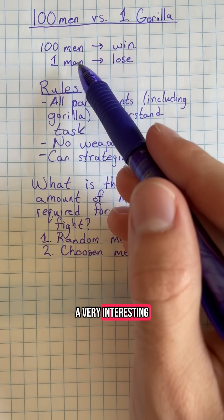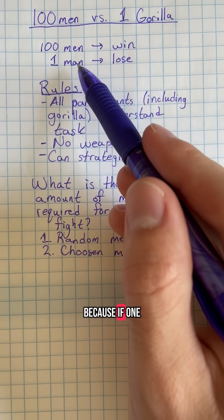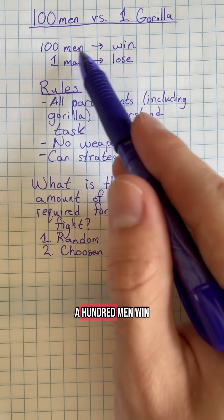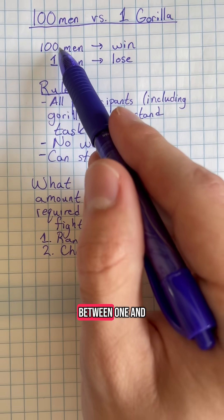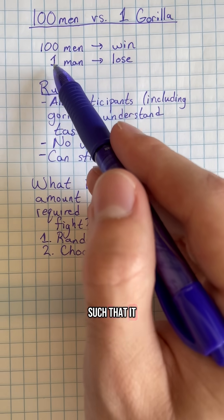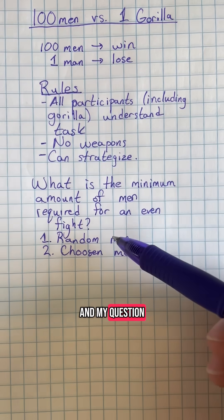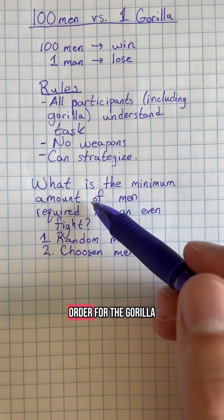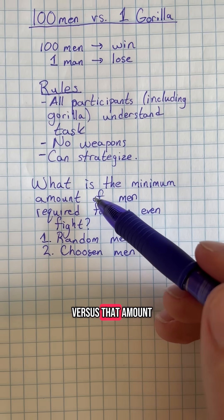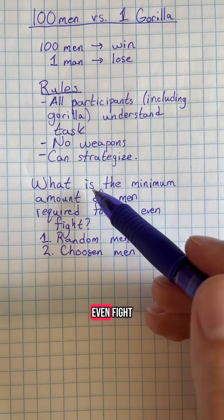But this opens us up to a very interesting mathematical question, because if one man is going to lose and 100 men win, this means that there must exist some amount of men between 1 and 100 men such that it flips from men losing to winning. And my question is, what is the minimum amount of men required in order for the gorilla versus that amount of men to be considered an even fight?